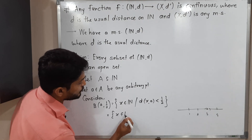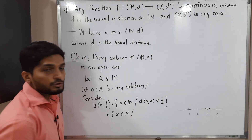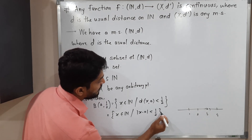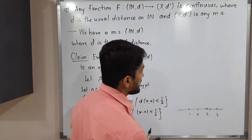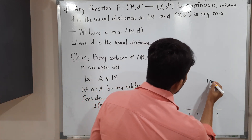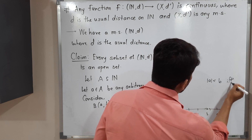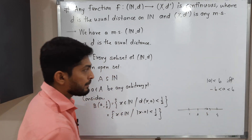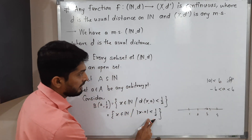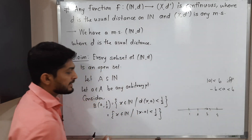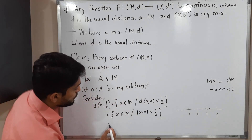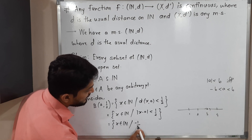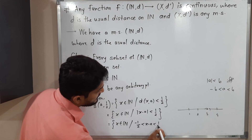Since d is the usual distance, this is equal to: {x ∈ N : |x − a| < 1/2}. We are familiar with the result that |a| < b if and only if −b < a < b. Applying this result with b = 1/2 and a replaced by x − a, we get: {x ∈ N : −1/2 < x − a < 1/2}.